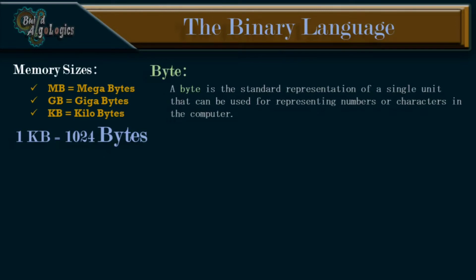So what exactly is a byte? A byte is the standard representation of a single unit that can be used for representing numbers or characters inside the computer. The byte is nothing but a sequence of 8 bits, and logically we represent it as 8 empty blocks where each box can have zeros and ones in it. These small boxes basically represent a single bit.